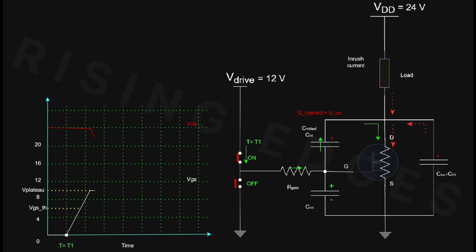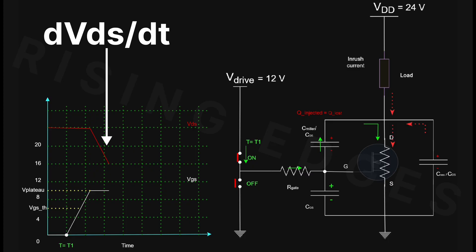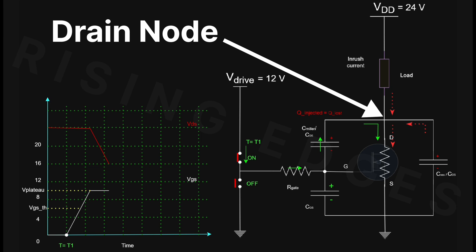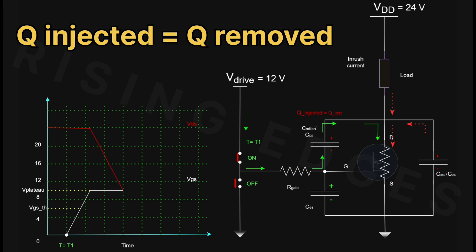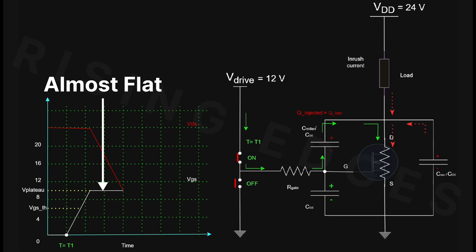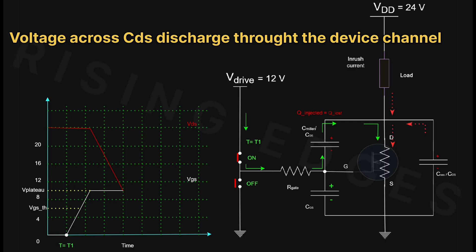As the VDS begins to fall, the drive current starts charging the Miller capacitance. However, because VDS is decreasing at a certain dV/dt, the voltage at the drain node drops which causes charge redistribution in the Miller capacitor. That's why the VGS curve appears relatively flat. Meanwhile, COSS, primarily CDS, is discharging through the MOSFET channel.